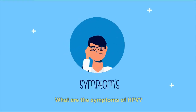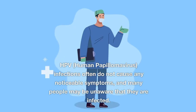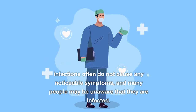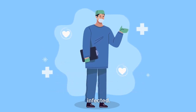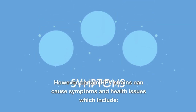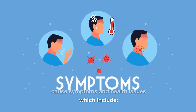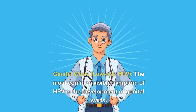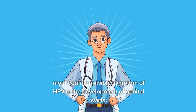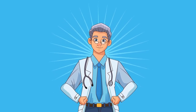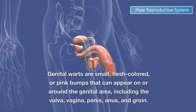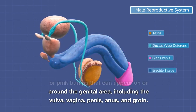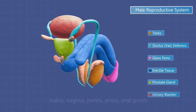HPV infections often do not cause any noticeable symptoms, and many people may be unaware that they are infected. However, certain HPV strains can cause symptoms and health issues. The most common visible symptom is the development of genital warts — small, flesh-colored or pink bumps that can appear on or around the genital area, including the vulva, vagina, penis, anus, and groin.